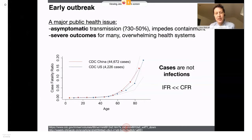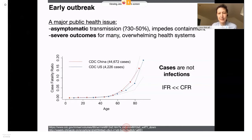Cases are individuals who turn up with symptoms and bump into the health system and therefore get counted. But many infections may be asymptomatic. So epidemiologists distinguish between the infection fatality ratio and the case fatality ratio. The infection fatality ratio, by definition, will be much lower than the case fatality ratio. By focusing on the case fatality ratio, we're ignoring a huge lower side of the iceberg — a huge number of individuals who are infected but are not entering the denominator of those estimates.